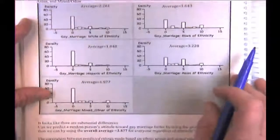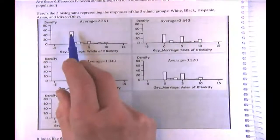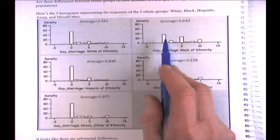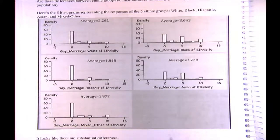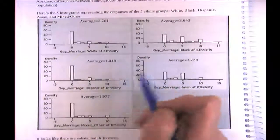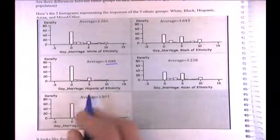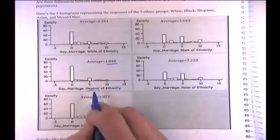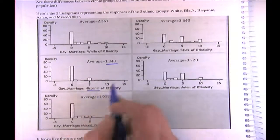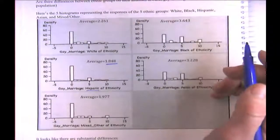These are five histograms representing the responses of five ethnic groups. There's a huge spike at zero — completely in favor of gay marriage — that dominates one group. The Hispanics or Latino group has the lowest average, making them the most supportive of gay marriage. Forgive me if the terminology isn't right — please let me know.